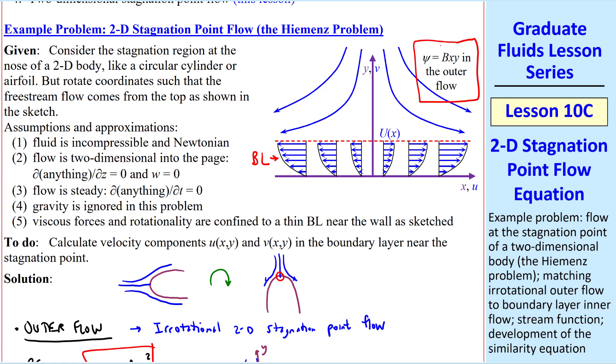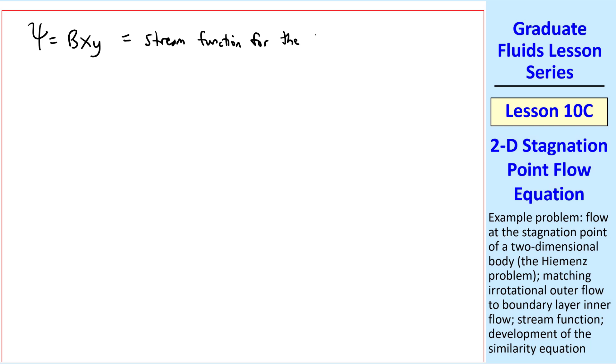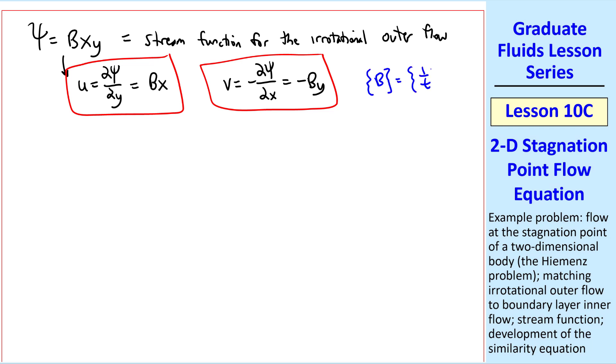I also wrote this out on our diagram. So ψ = bxy is the stream function for the irrotational outer flow, from which we get u = ∂ψ/∂y = bx, and v = -∂ψ/∂x = -by. We note that b is just a constant with dimensions of 1 over time. This constant b is related to the magnitude of the freestream velocity approaching a 2D stagnation point. For some kind of a 2D body like an airfoil, b would be related to u∞ approaching the body. But we're concerned only with this tiny region near the stagnation point. In a later lesson, I'll show you how b relates to u∞.